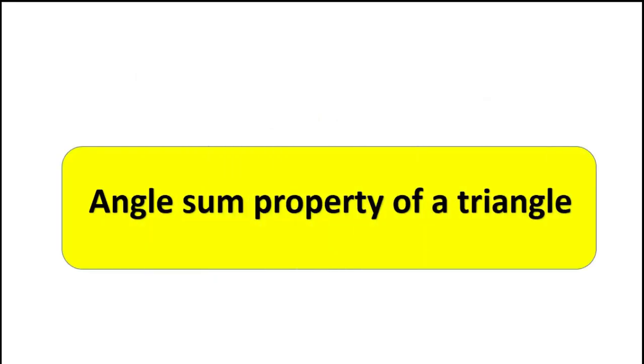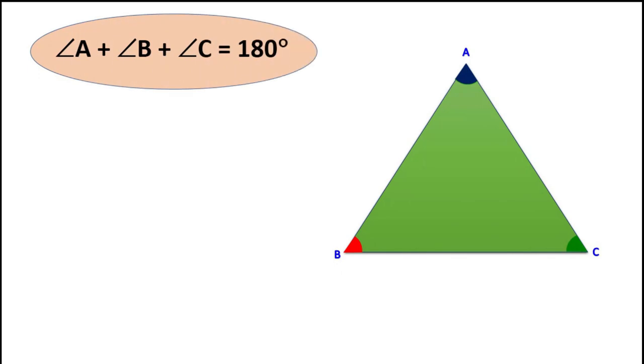Let us visualize how the sum of the interior angles of a triangle is 180 degrees. In triangle ABC, angle A plus angle B plus angle C is equal to 180 degrees.